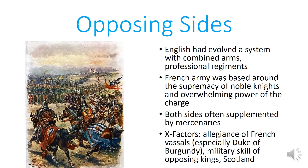England had evolved a system of combined arms and professional regiments, with much experience fighting the Scots and utilizing infantry formations more effectively. The French army by contrast had many more knights and based their strategy around overwhelming cavalry charges, with less emphasis on infantry. English infantry included men equipped to fight knights on foot and the famous longbowmen, who had great range and could strike opponents from a distance. Both sides supplemented their ranks with mercenaries — the French most famously hiring Italian crossbowmen to try to offset the English longbowmen, though that was not particularly effective.